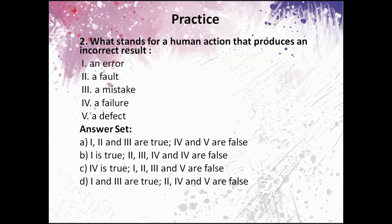The second question: What stands for human action that produces an incorrect result? This is a Roman type of question. So, we should select a correct answer. We know that a human action that produces an incorrect result is an error and the synonym of it is a mistake. So, the correct answer is first and third. We should take a look and find it in the answer set. So, D. First and third are true. Others are false.